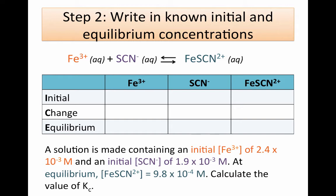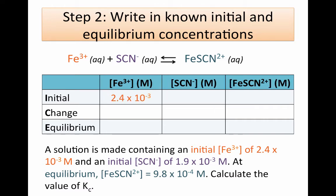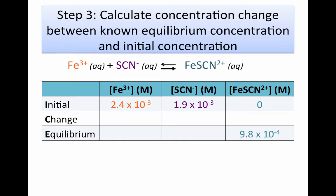Step two is to write in the concentrations that we know directly from the problem. We have an initial iron 3+ concentration of 2.4 × 10⁻³ molar, and an initial thiocyanate ion concentration of 1.9 × 10⁻³ molar. We don't have an initial concentration for iron thiocyanate, but because we did not add it to our solution, we can assume it is zero at the start. We also write in the equilibrium concentration we know: 9.8 × 10⁻⁴ molar for the iron thiocyanate complex. So we have four numbers in our table and need to find five more.